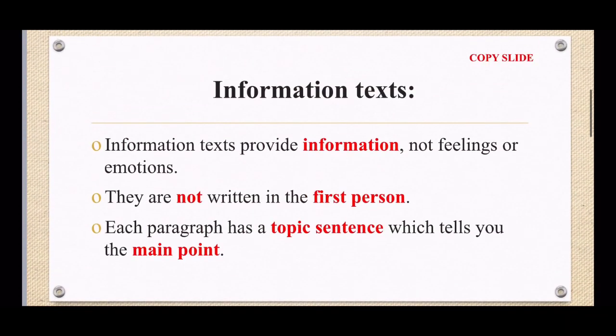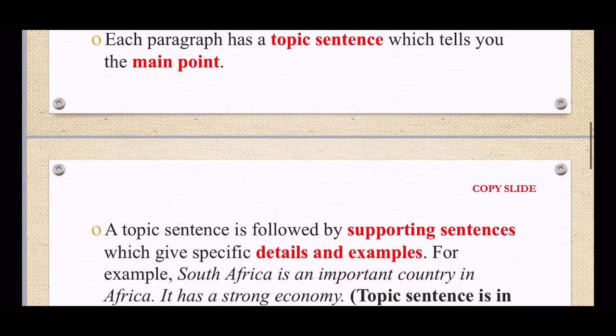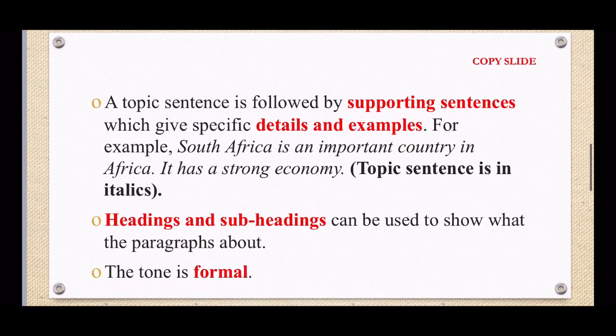If we just go back we know it provides information. It's not written in the first person. Each paragraph has a topic sentence and it tells us about the main point. And then the topic sentences can also have supporting sentences which give us specific details and examples. We have headings and subheadings and the tone is formal. Right, so that's information text. Copy both slides into your book please.